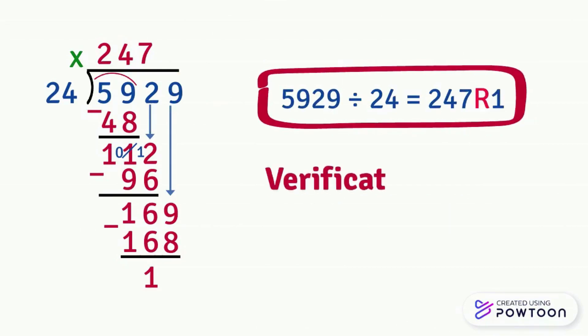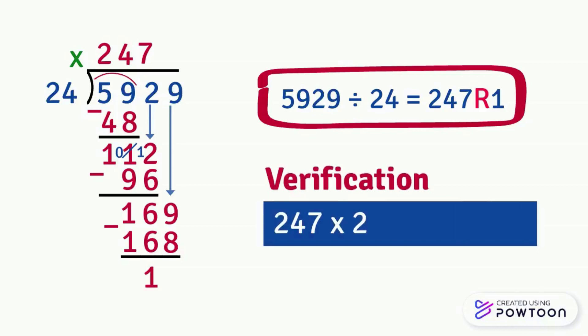We can verify that our work is correct by multiplying 247 by 24 and adding 1. We will get 5929. The division is done. And now all you have to do is to practice to divide well.